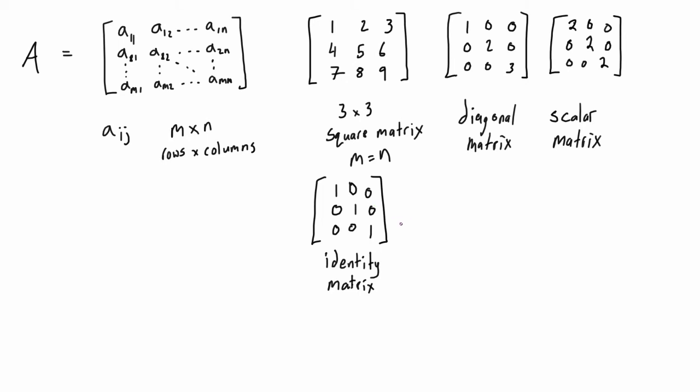When we're talking about matrices, if we have two matrices for example, we say that they're equal if they have the same size and all of their corresponding entries are the same.